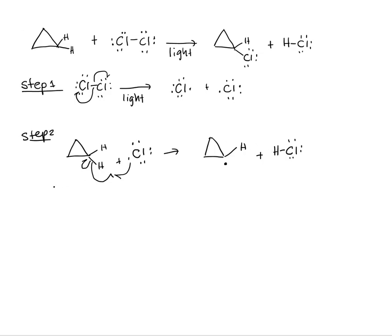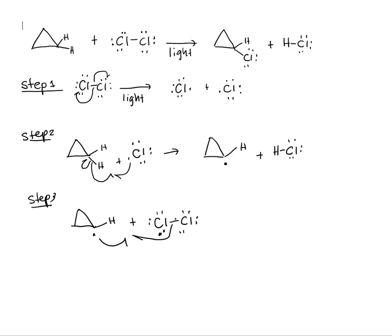Step three: the cyclopropane with the radical carbon reacts with another molecule of molecular chlorine. That lone electron pairs with half of the Cl-Cl bond to form a covalent bond, and the other half of the Cl-Cl bond goes to the right chlorine as a lone electron. We have now formed our chlorocyclopropane, and in the process we produce another chlorine radical.